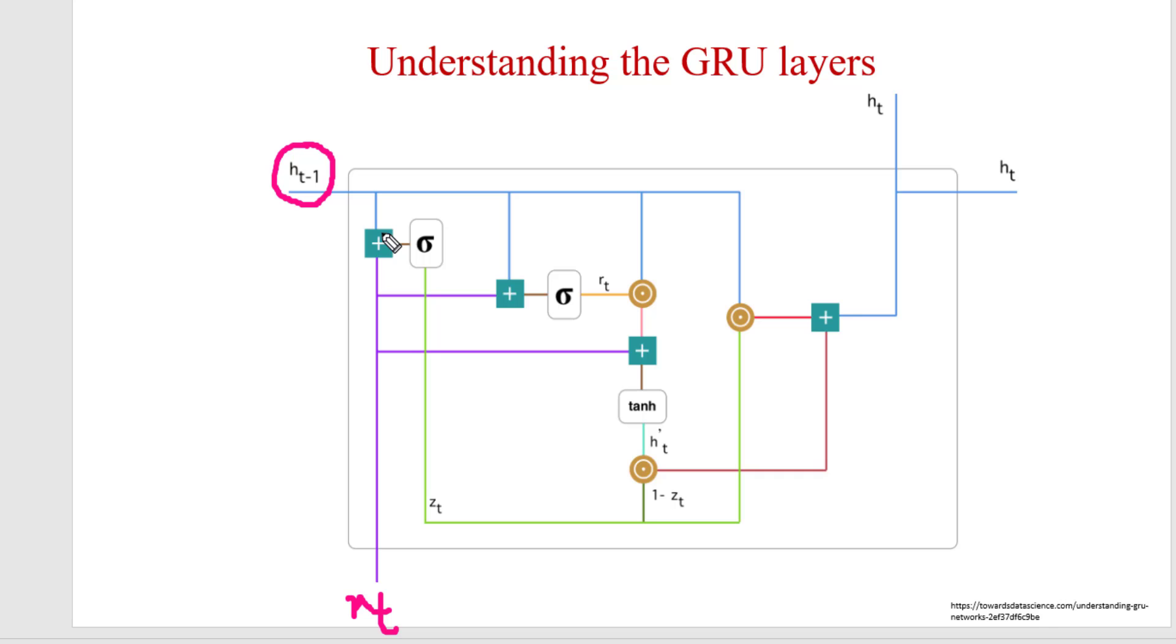So we are going to perform matrix addition after performing w t-1 into w t-1 h and w x at t into x t. We are going to perform matrix addition of these two outputs. After that we will apply sigmoid activation function and its output will be z t.